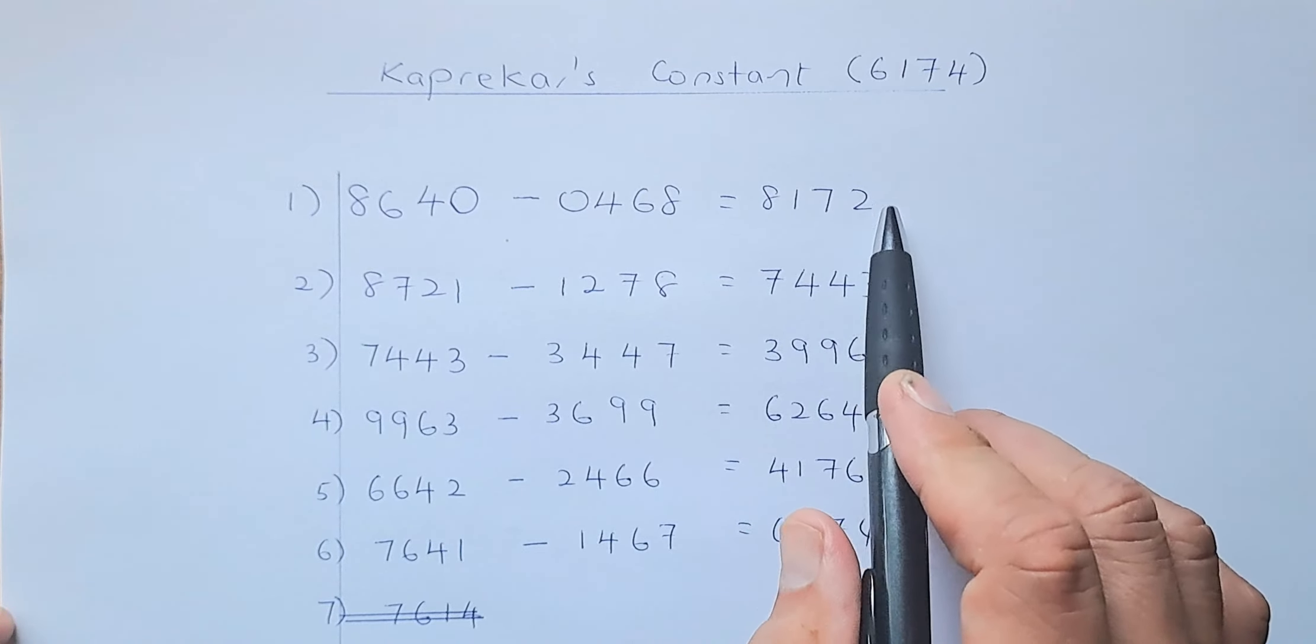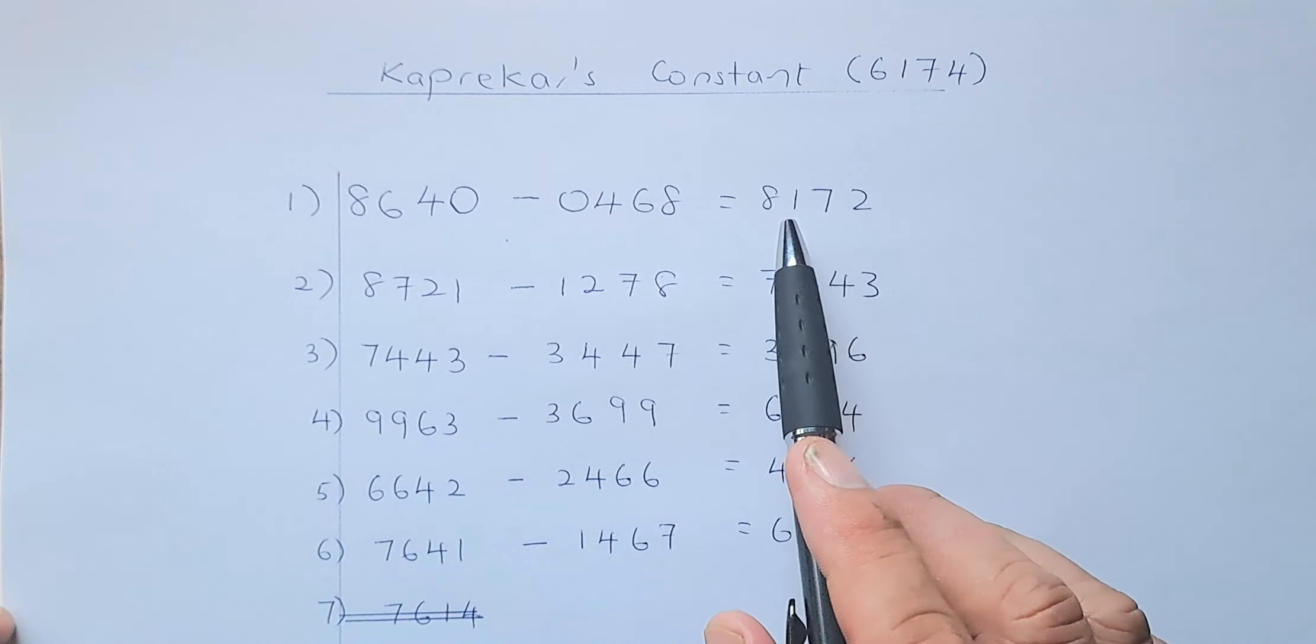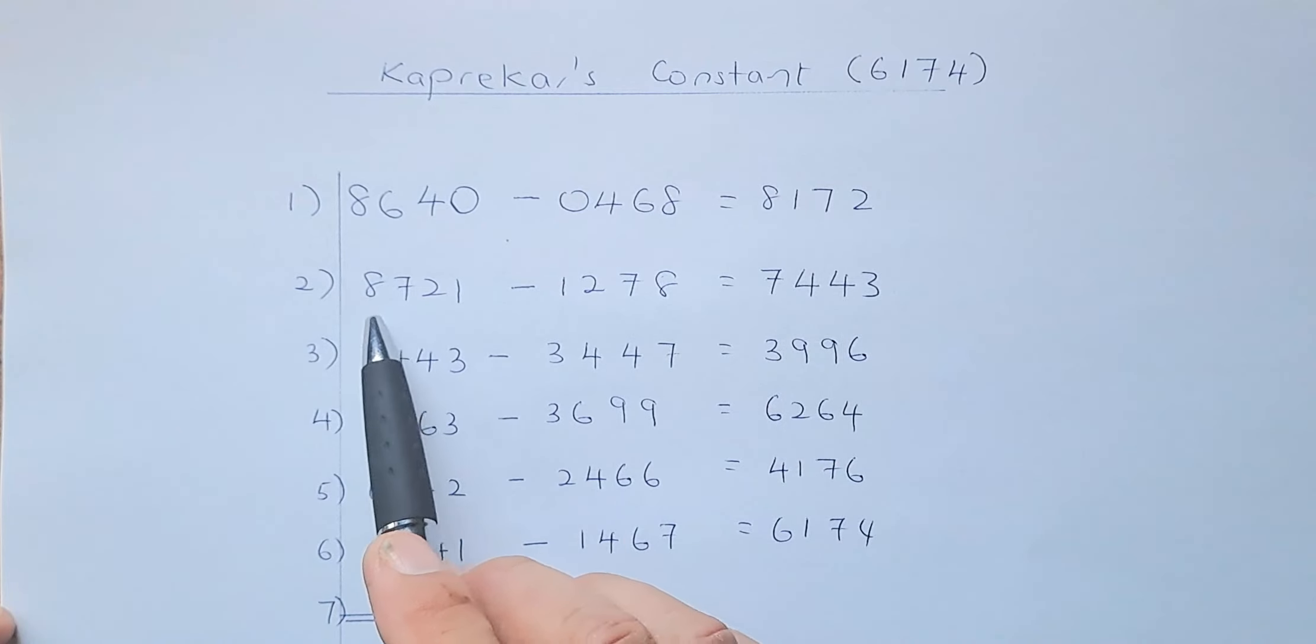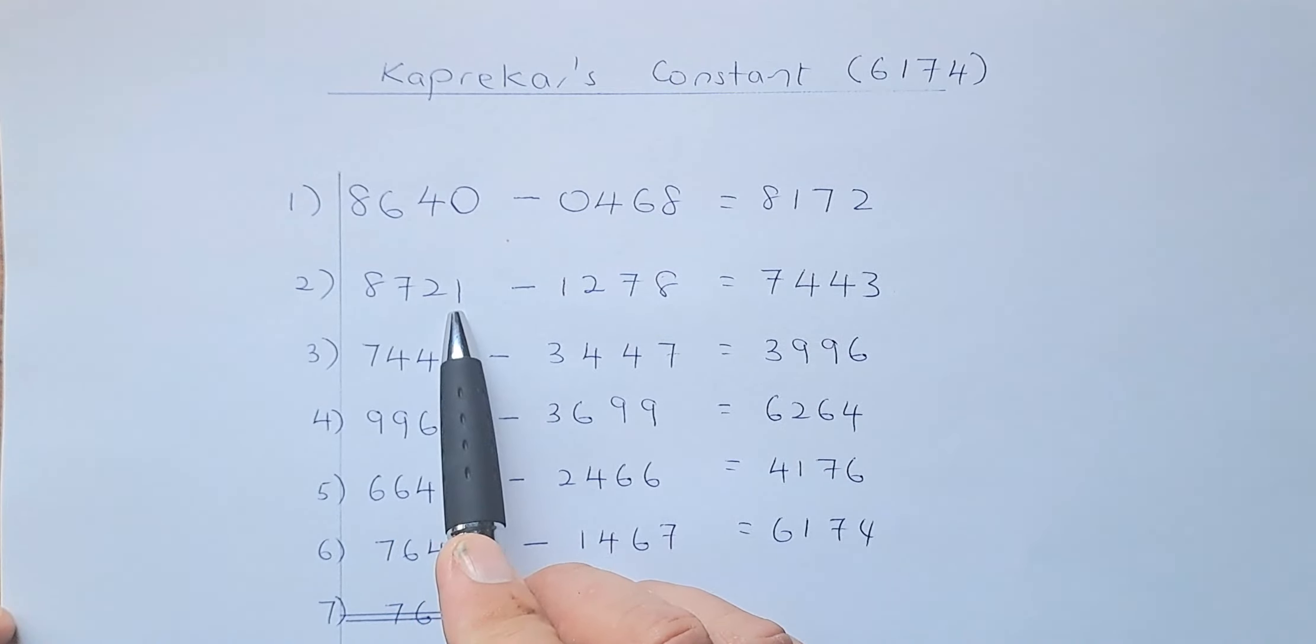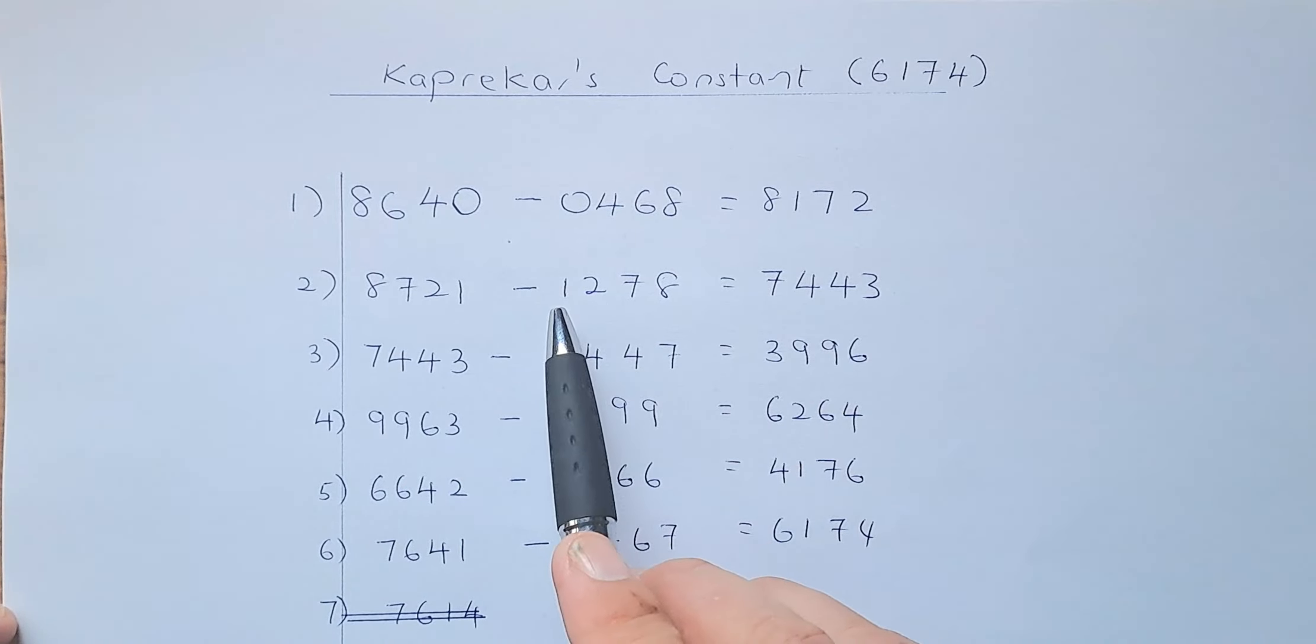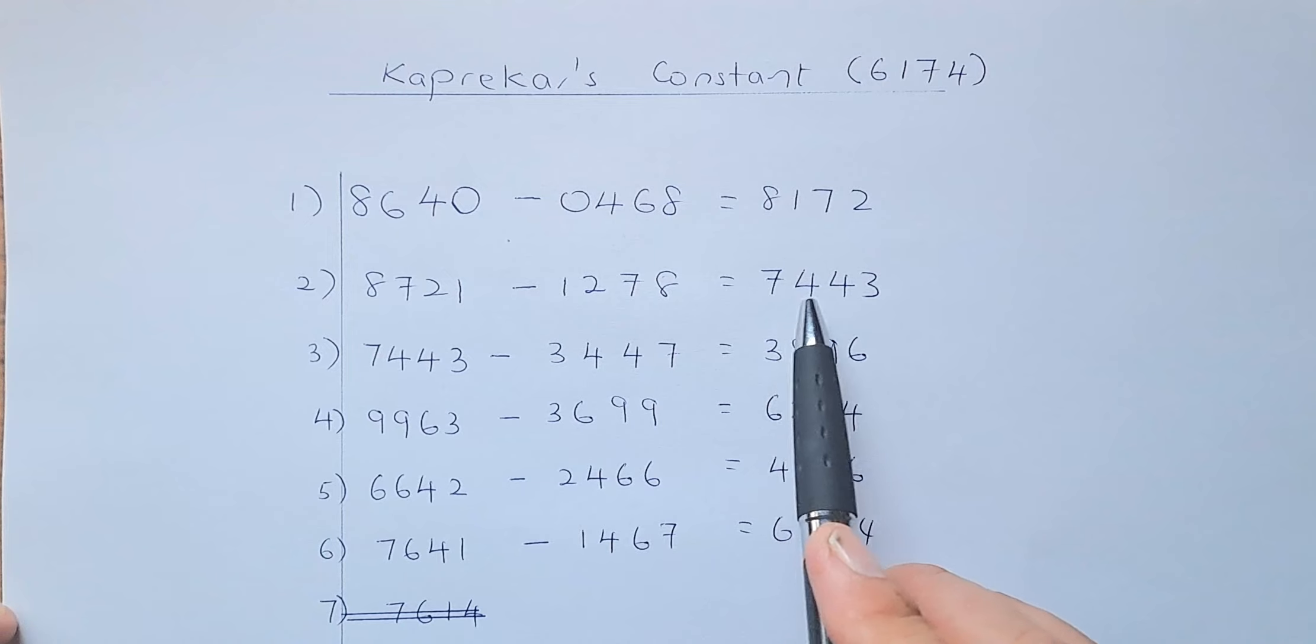So next step, you have to rearrange this number such that it becomes from biggest to the smallest. So 8172 becomes 8721. And you're going to minus the reverse, the smallest to the biggest. So minus 1278 and put in your calculator, it's going to be 7443.